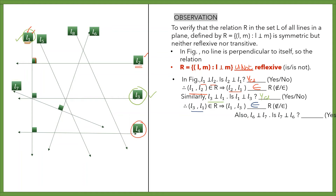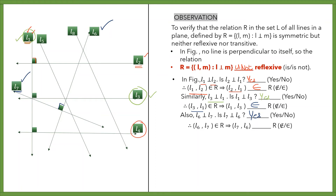Let us take one more example: lines L6 and L7. L6 is perpendicular to L7, and we can say L7 is also perpendicular to L6. So L6 is related to L7 and L7 is related to L6. In each of these cases, the symmetric property holds. Therefore, relation R is symmetric — the definition of symmetry, A is related to B implies B is related to A, is justified for each of these lines.